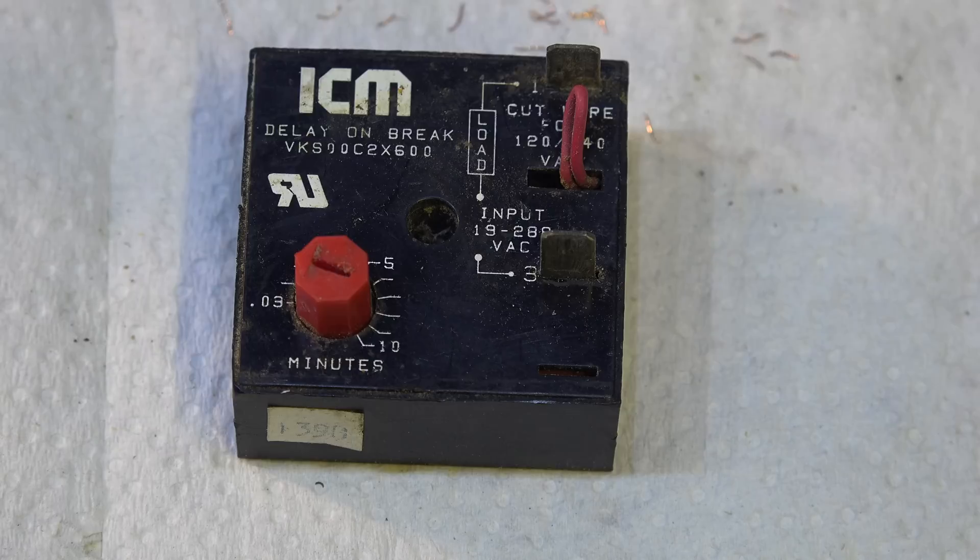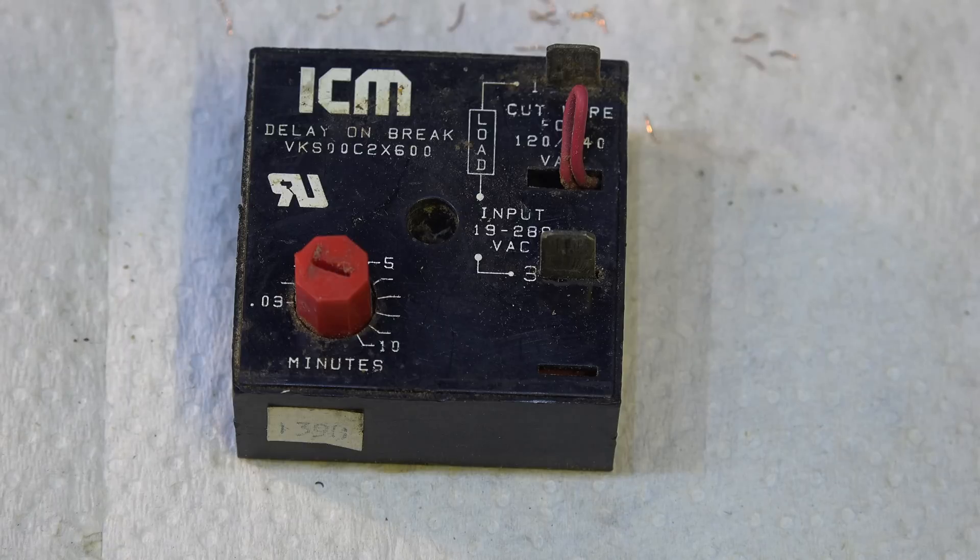What are you using it for? In the HVAC industry, we use compressors. Compressors, when they shut off, have a high pressure on the high side and a low pressure on the low side. If they are not hard to start compressors and we try to start them immediately after we've shut them off, they oftentimes won't start.